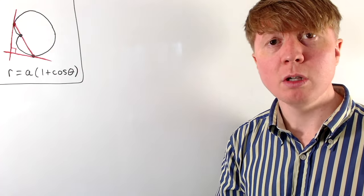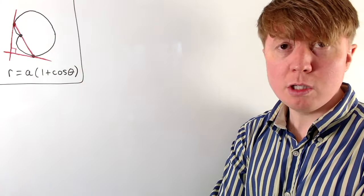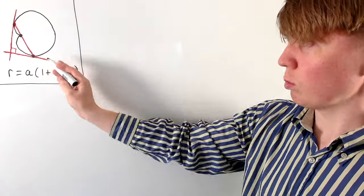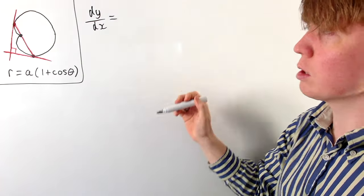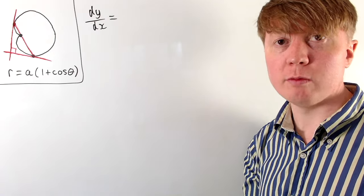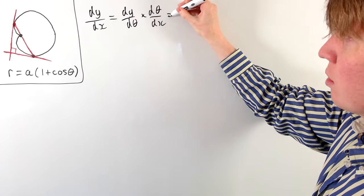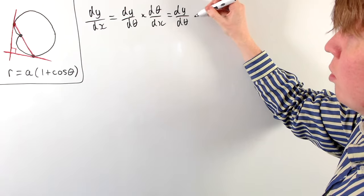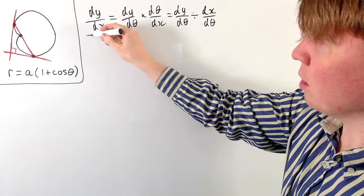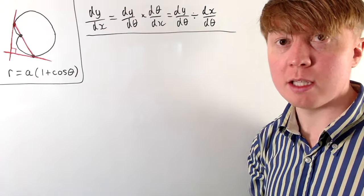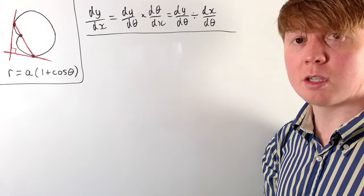To derive this, we need a nice expression for the gradient of these tangents. It's not straightforward in polar coordinates, but we can express the gradient as dy/dx by converting back to Cartesian coordinates. Using the chain rule, dy/dx equals dy/dθ times dθ/dx, which we can rewrite as dy/dθ divided by dx/dθ. This is convenient because we can express y and x as functions of theta.